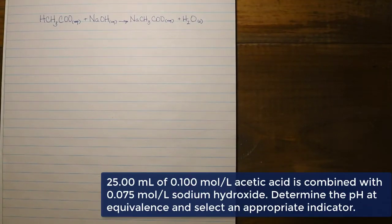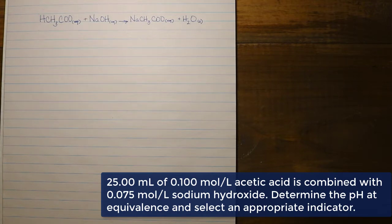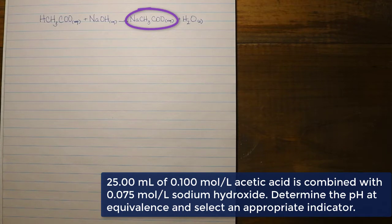We're going to take a look at a fairly common reaction, especially in high school labs or in introductory chemistry, and that is a neutralization reaction that occurs between acetic acid, which is a weak acid, and sodium hydroxide, which is a strong base. This produces a readily soluble salt of sodium acetate and water, typical of a neutralization reaction between an acid and a base.